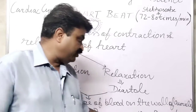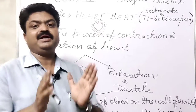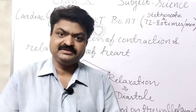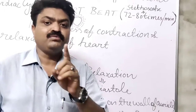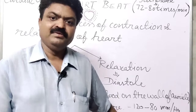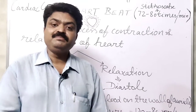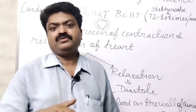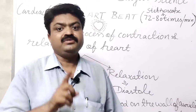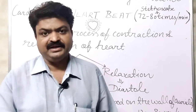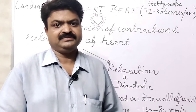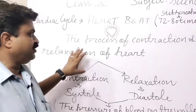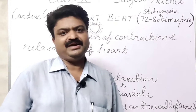We can regulate blood pressure by taking a balanced diet and doing regular exercise. Nowadays people are facing problems with blood pressure due to malnutrition or lack of exercise. You should take care of your health by taking a balanced diet and doing exercise. This is about heartbeat and blood pressure — write this topic in your notebook. Thank you very much and have a pleasant day.